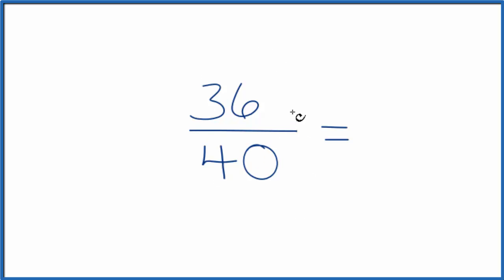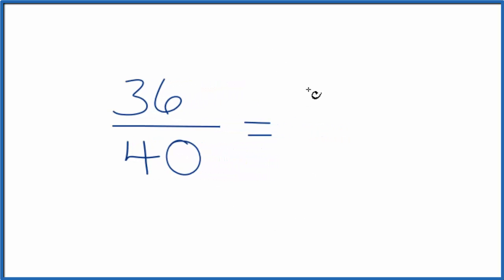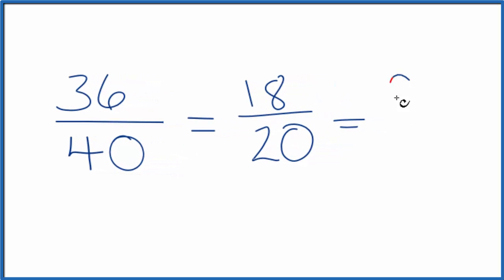We could simplify the fraction. 2 goes into 36 18 times, 2 goes into 40 20 times. We could simplify that even further, 2 goes into 18 9 times and 20 10 times. So 36 over 40, that's the same, it's an equivalent fraction to 9 tenths.